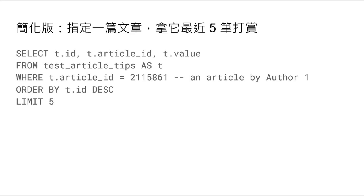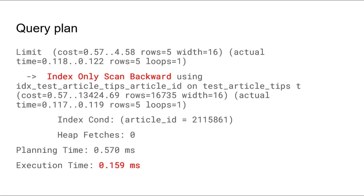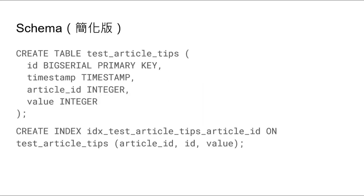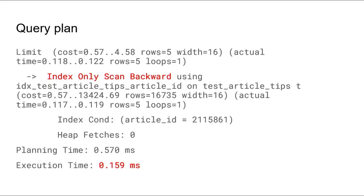首先簡化版吧，就我有一篇文章，我想拿它最近的五個打賞。這裡我們簡單的就用ID排序，ID越大就代表越後發生，我們用order by tip.id in descending order，然後拿頭五個，就是ID最大的五個打賞，where article_id是某個ID。這樣效果很不錯，因為我們地方index呢在這裡做一個index only scan backwards，就是說它根本不需要去看你的表，直接就在index裡面拿到所有需要的field。所以index only scan，不需要拿到index以後再用它的id去main table裡面拿，就非常快，0.1幾個毫秒就做完了。